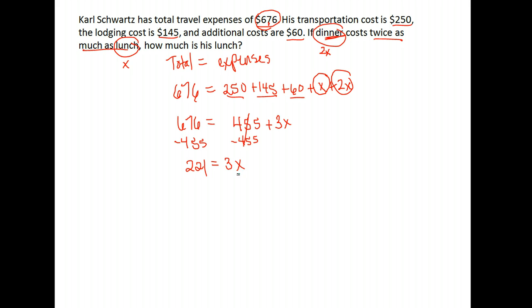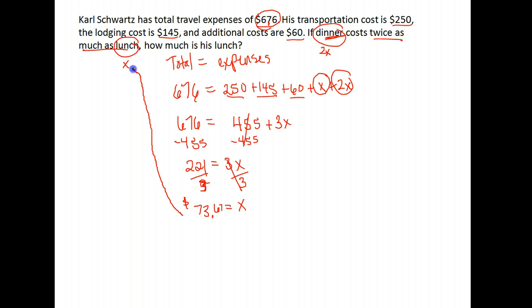We have 3 times X, so to solve we do the opposite of multiplying by 3 and divide by 3. We get $73.67 for X. And remember, X stood for the price of lunch. So the cost of lunch for him was $73.67 — apparently he ate at some pretty nice places.